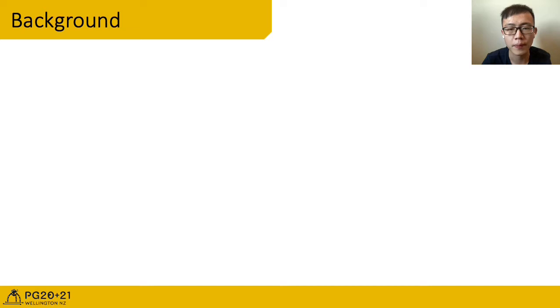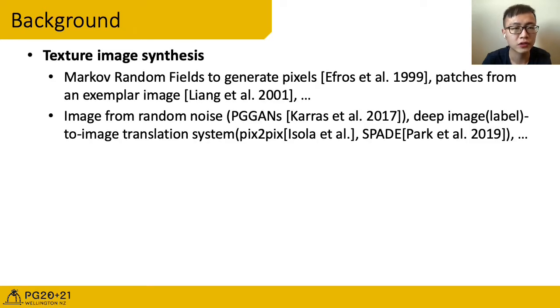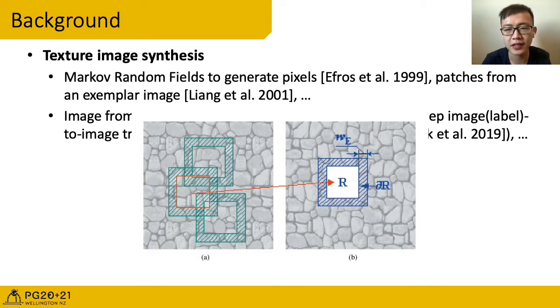Let's talk about the background. For texture image synthesis, the traditional way is to use Markov random fields to generate pixels, patches from exemplary images, and so on. This is an example of patch-based sampling. It calculates the border to find the best patch fitted in a specific location.